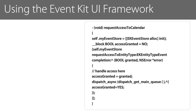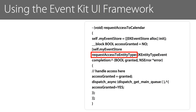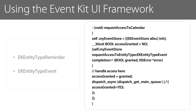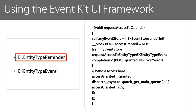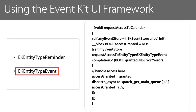This code creates and initializes an instance of the EKEventStore. The requestAccessToEntityType completion method of the EKEventStore object is called in a block. The two constants that you can pass to the requestAccessToEntityType method are EKEntityTypeReminder and EKEntityTypeEvent. The EKEntityTypeReminder constant asks for authorization to access the reminders in the calendar database, while the EKEntityTypeEvent constant asks for authorization to access the events in the calendar database.